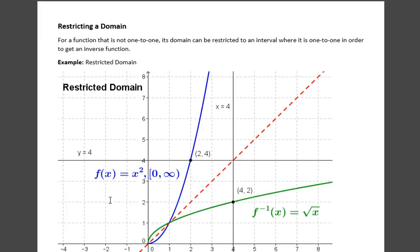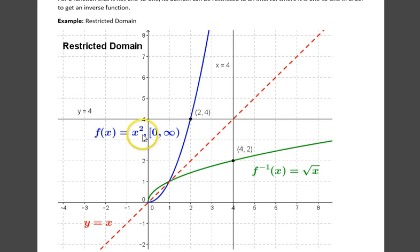Restricting a domain. For a function that's not one-to-one, its domain can be restricted to an interval where it is one-to-one, in order to get an inverse function. Taking the same function, f of x equals x squared, in blue, but restricting its domain to positive numbers, 0 through infinity,